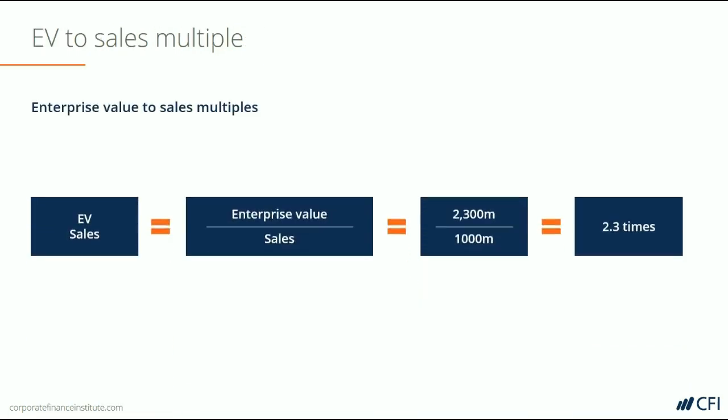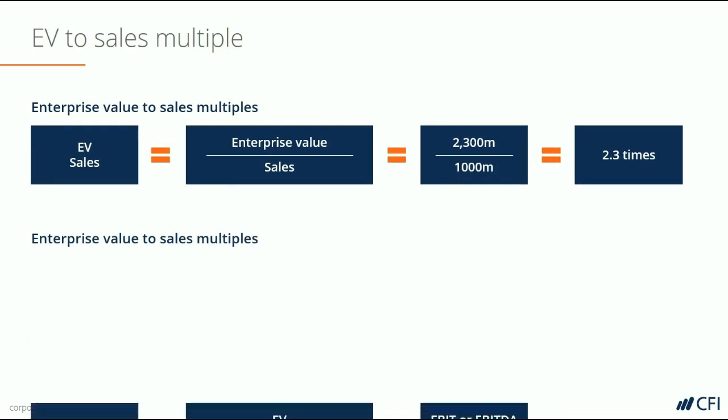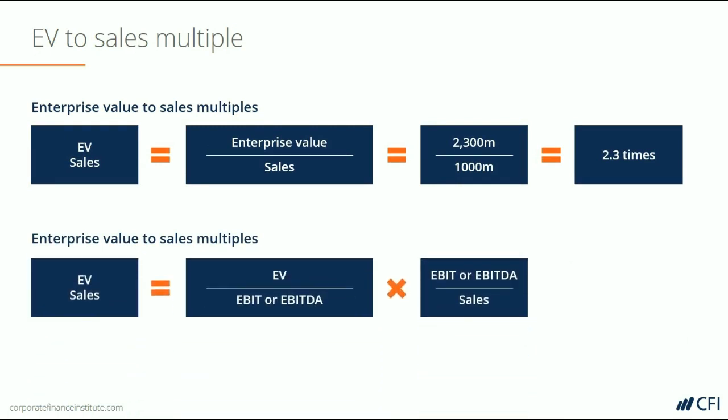Let's start at the top of the income statement with the EV to Sales multiple. There are two different ways we can calculate it. The first and most straightforward is to simply take the enterprise value of $2.3 billion and divide it by the sales revenue on the income statement of $1 billion. That equates to an EV to Sales multiple of 2.3 times.